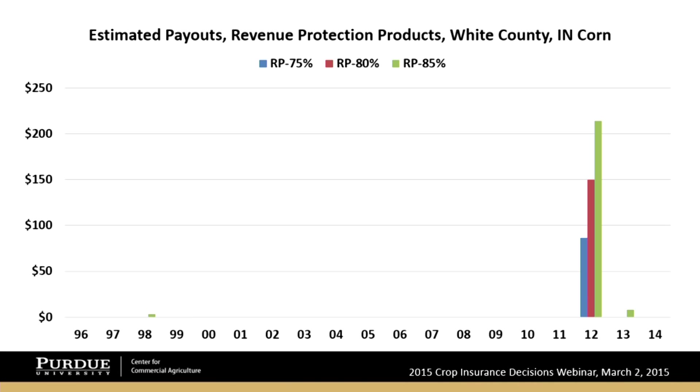The reason payouts are infrequent in White County is that the natural hedge works well there — when yields drop, they tend to drop nationally and drive prices higher. The soils are also good enough that large yield drops that would trigger payments are less common. Your county might not fit that scenario, so you need to use the tools and look at your specific situation.